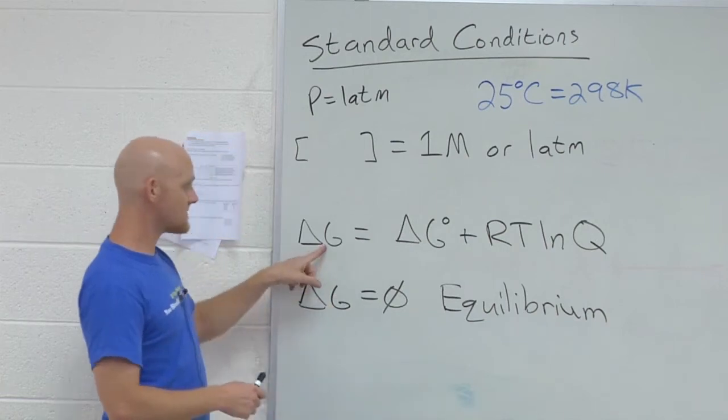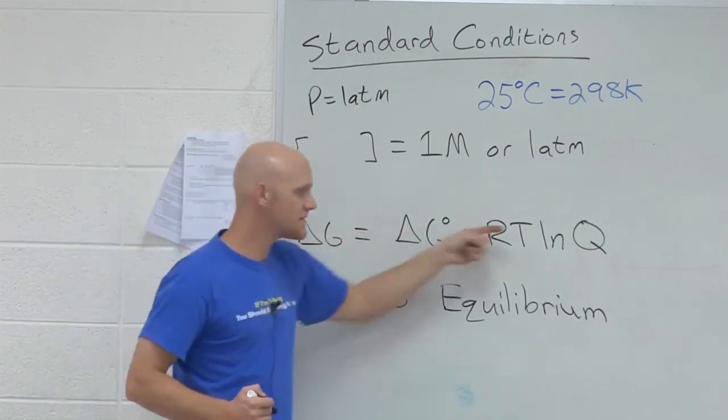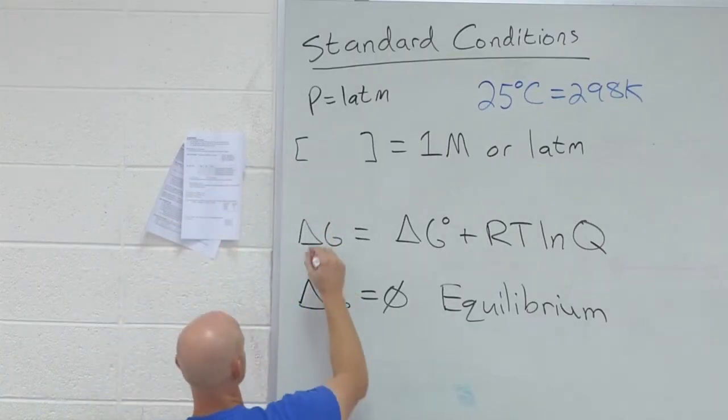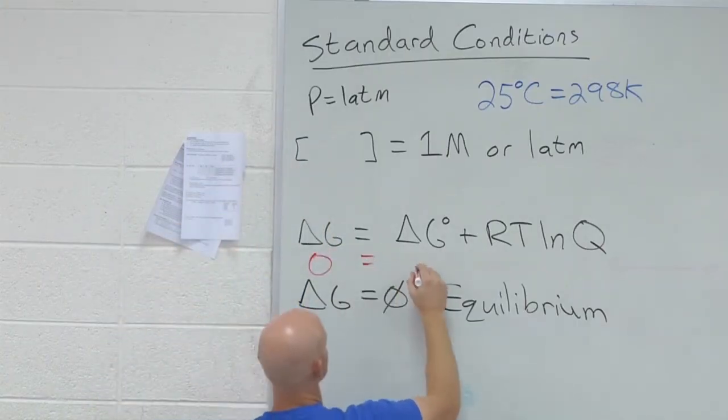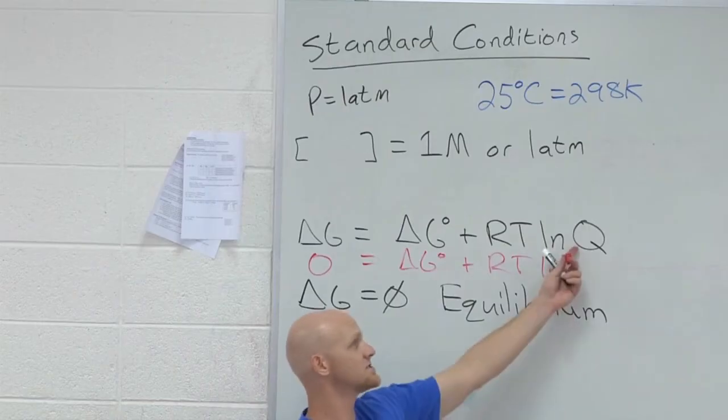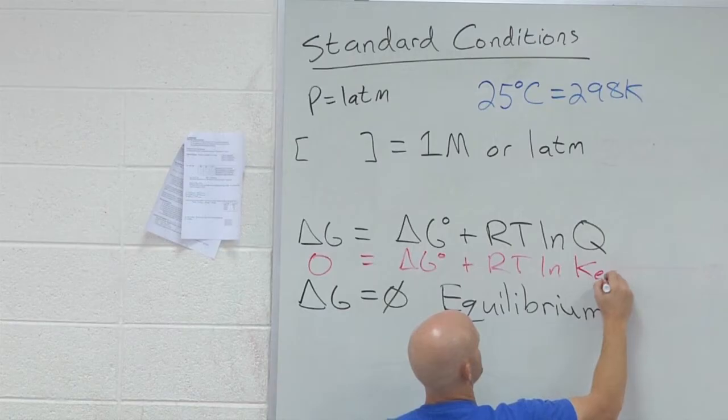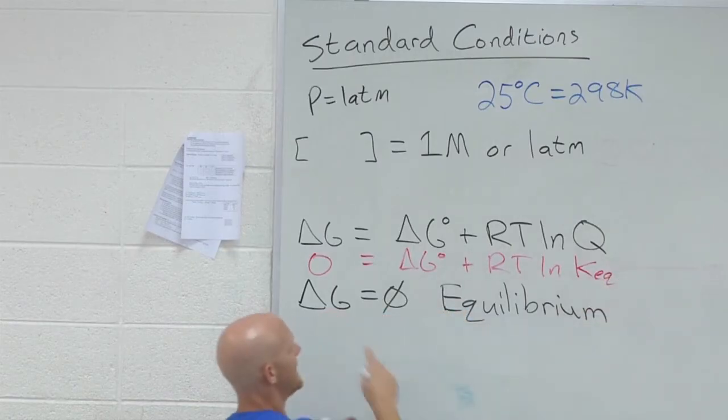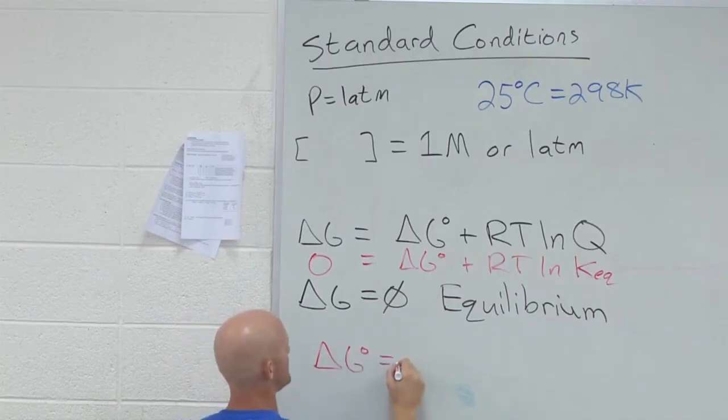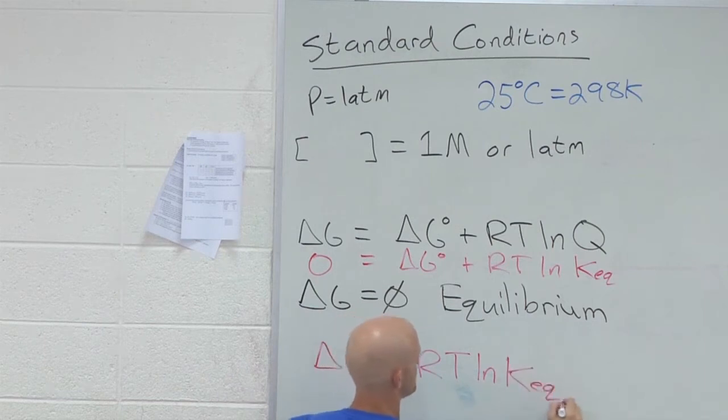So if we look at this then, if it's this value that goes to zero, then this equation, a special case, when you reach equilibrium, you'd get zero equals delta G standard plus R T L N. And in this case, if you're at equilibrium, we can just say Q is equal to what at equilibrium? K. And if you rearrange this, you now find that delta G standard is equal to negative R T natural log of K.